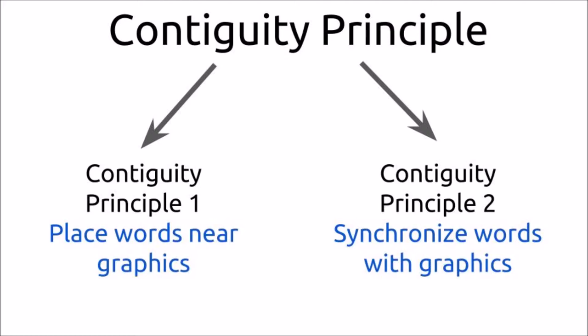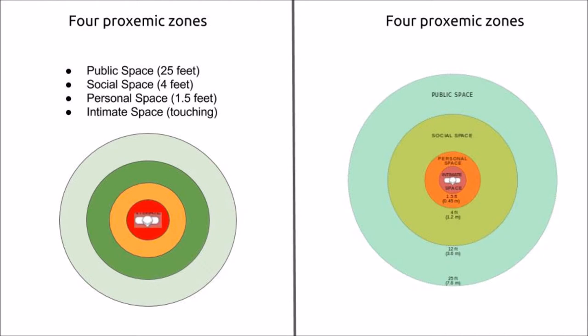The following case presents a bad example of Contiguity Principle 1. Notice how on the left-hand slide, the text is miles away from the graphic. Contrastingly, on the right-hand side, we can see a good example where the text is incorporated into the graphic.